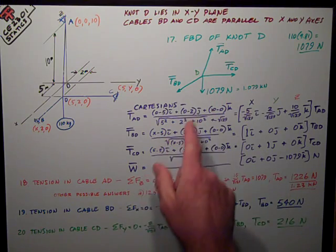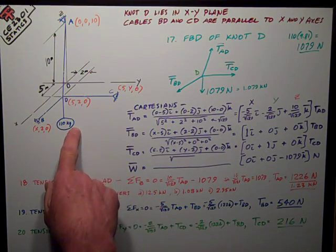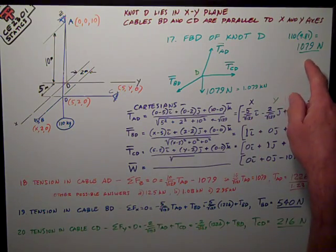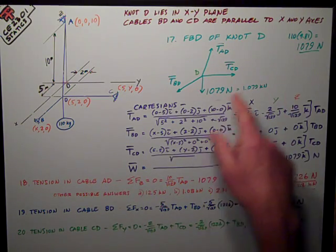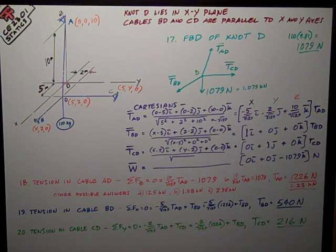And the weight, which was given to me as a mass of 110 kilograms, but I've got to convert that with 9.81 to get 1079 newtons or 1.079 kilonewtons.